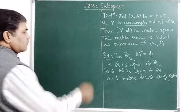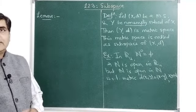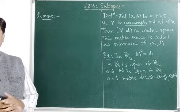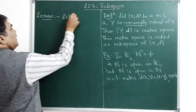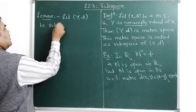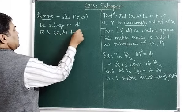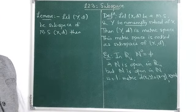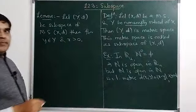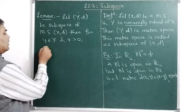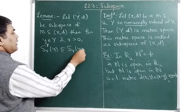We will now take a simple lemma. Let (Y, D) be a subspace of metric space (X, D). Then for y belonging to Y and r > 0, the open sphere S(r, y) in Y is a subset of the open sphere about y in X. That is, S_r(y) in Y ⊆ S_r(y) in X.